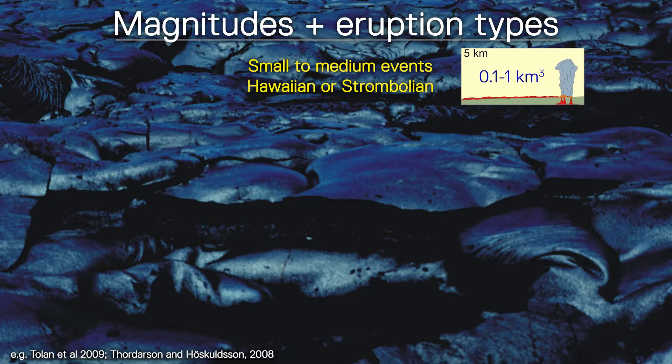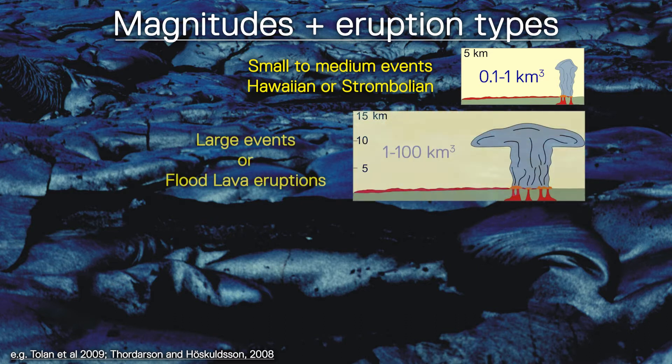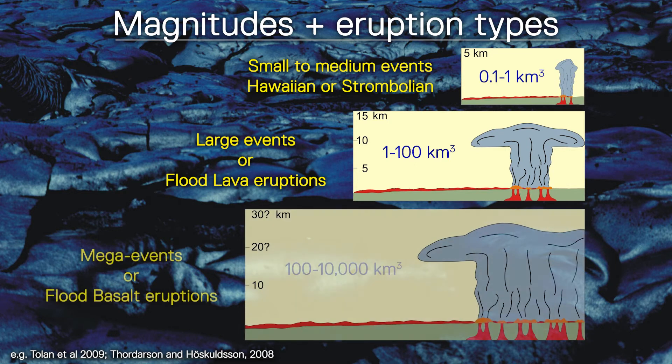There are a number of ways we can classify effusive eruptions. One way is by magnitude, either size or volume. We can talk about small or medium-sized eruptions — Hawaiian or Strombolian-like events that produce lava flows on the order of 0.1 to 1 cubic kilometer in size. We can talk about medium-to-large events like flood lava events, which are 1 to 100 cubic kilometers in size — a good example being the 1783–84 Laki eruption. And we also have mega eruptions, which are 100 to 10,000 cubic kilometers in size, typically known as flood basalt eruptions.